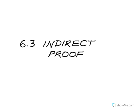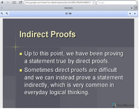Lesson 6.3 is about indirect proof. So, up until this point, we've been using direct proofs. The two-column proofs are direct proofs. That's where we try to prove the conclusion is true directly.